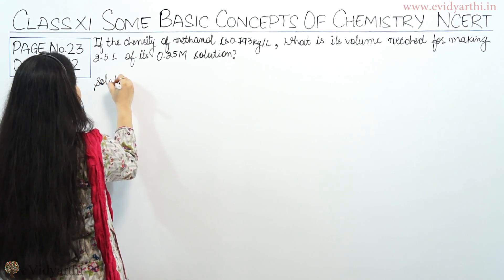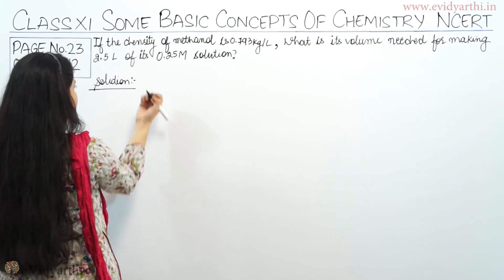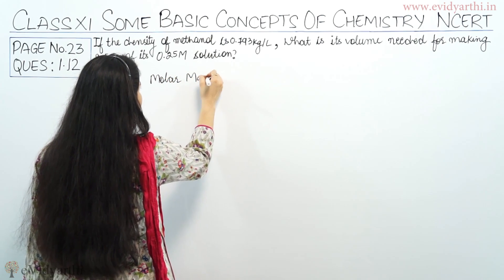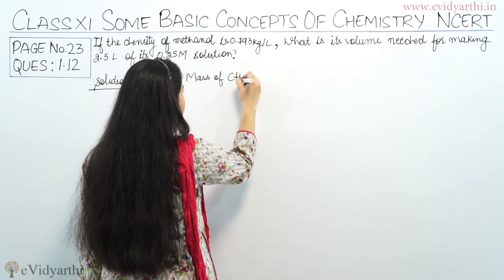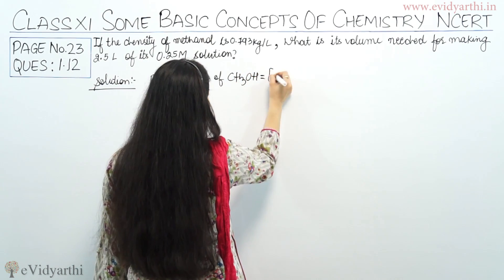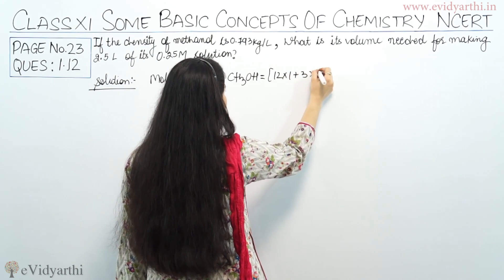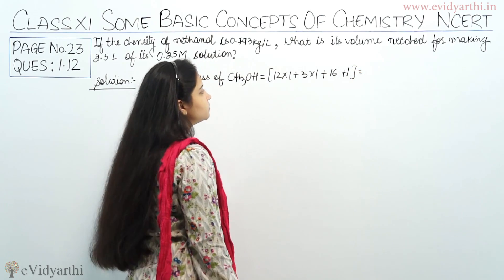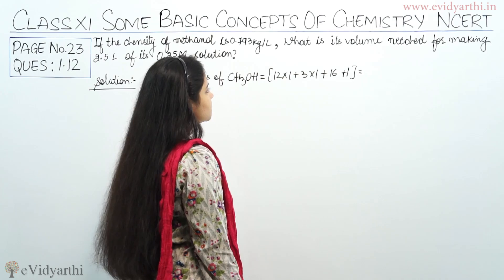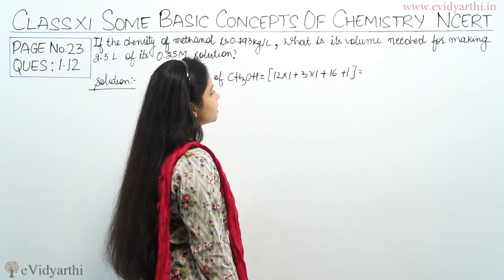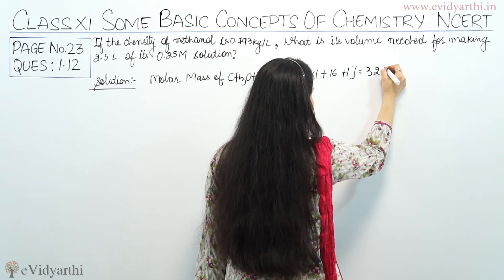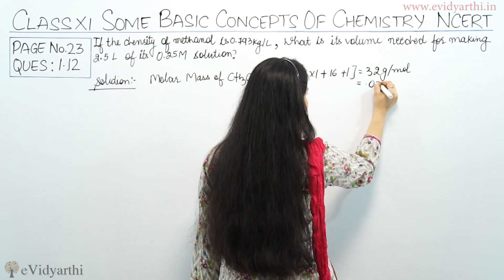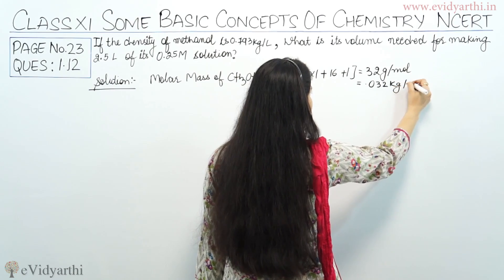Let's have a look at the solution. First of all, we calculate the molar mass of methanol, CH₃OH. So the molar mass will be: 12 × 1 + 3 × 1 + 16 + 1, which equals 12 + 3 = 15, plus 16 = 31, plus 1 = 32. So it is 32 grams per mole, or 0.032 kilograms per mole.